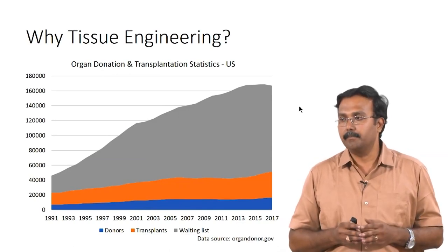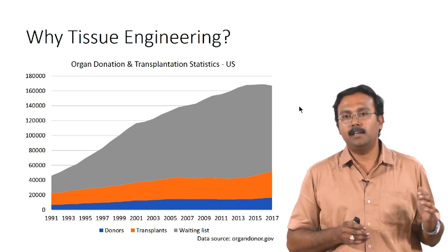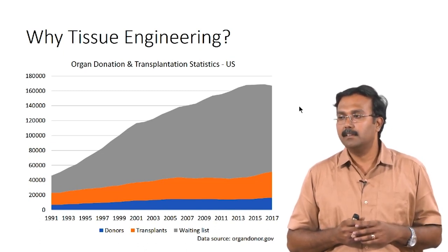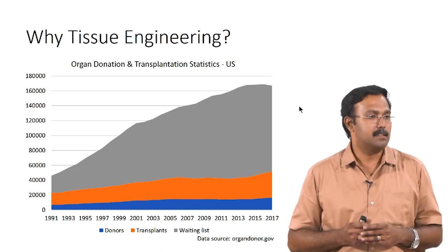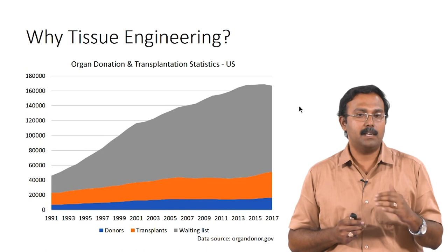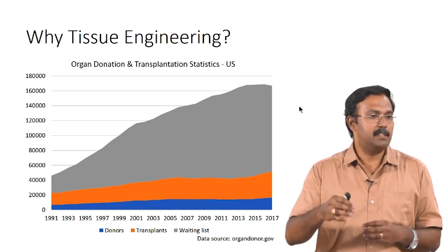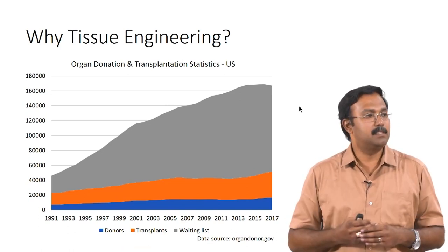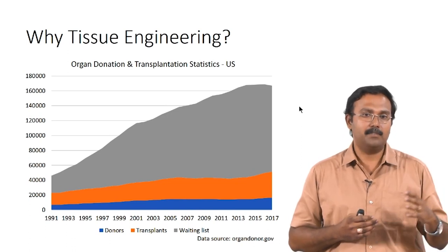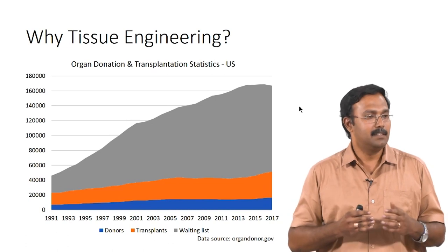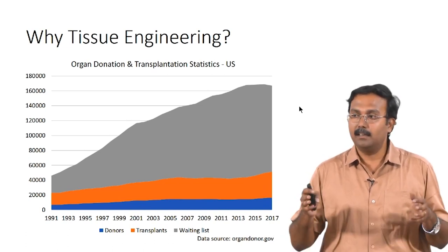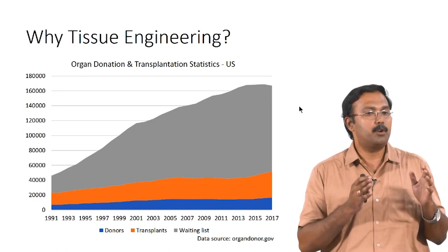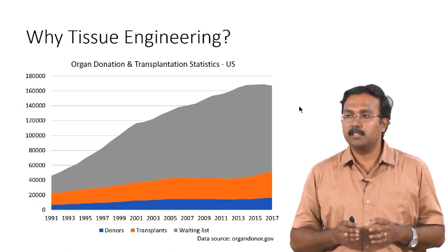This is the statistics from the US. You can see the trends in the number of transplants, number of donors, and number of people on the waiting list. The grey curve is the number of people on the waiting list, the orange one is transplants, and blue is donors. Transplants are higher than donors because a donor can donate more than one organ. From 1991 to 2017, the gap is much wider. This is for a developed nation like the US, where 54 percent of people are registered for organ donation.